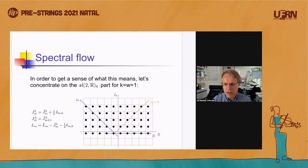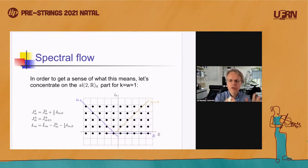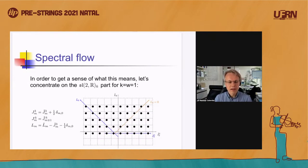Anyway, that is the representation that, according to Maldacena-Ooguri, you have to add to your spectrum. And from this free-field realization, it looks like it's arising from the spectral flow of the three fields.